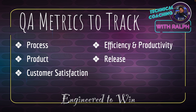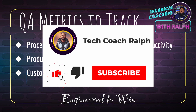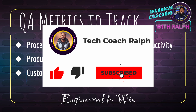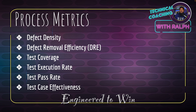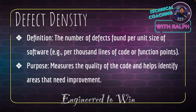The QA metrics to track fall into five categories: process metrics, product metrics, customer satisfaction metrics, efficiency and productivity metrics, and release metrics. Under process metrics we have: defect density, defect removal efficiency (DRE), test coverage, test execution rate, test pass rate, and test case effectiveness.